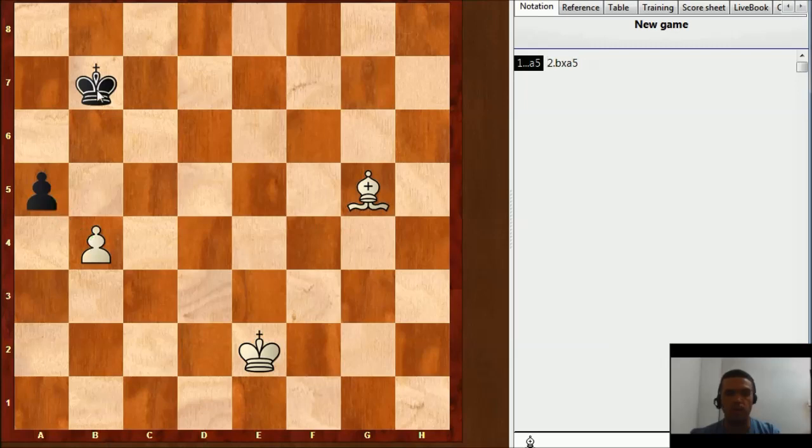Also, black king is controlling the promotion square, so it is going to be a draw. And if white plays b5, then you have king b6 and you are taking the pawn. So, after this move a5, black gets a draw in this position.